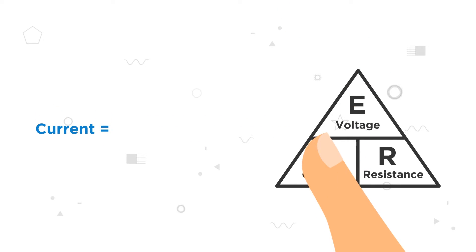To solve for current, cover the I with your thumb. Since voltage is on top of resistance, we can see that current is equal to voltage divided by resistance.